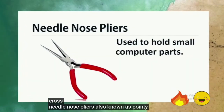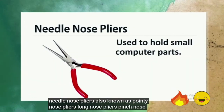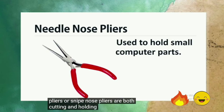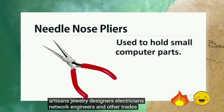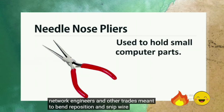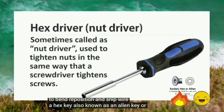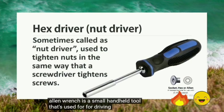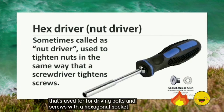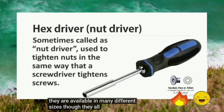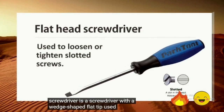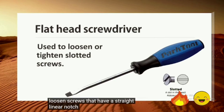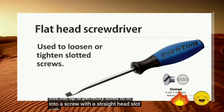Needle nose pliers, also known as pointy nose, long nose, or snipe nose pliers, are both cutting and holding pliers used by electricians, network engineers, and other tradesmen to bend, reposition, and snip wire. A hex key, also known as an Allen key or Allen wrench, is a small handheld tool used for driving bolts and screws with a hexagonal socket, available in many sizes. A flat head screwdriver has a wedge-shaped flat tip used to tighten or loosen screws with a straight linear notch in their heads.